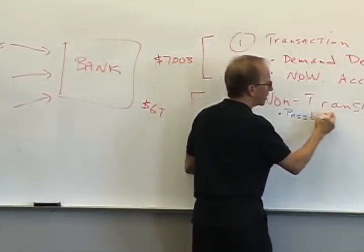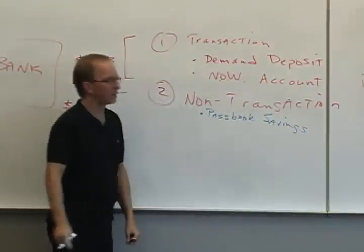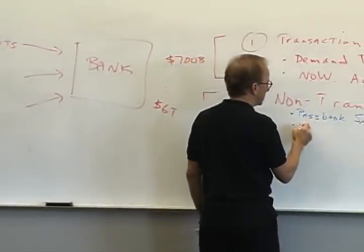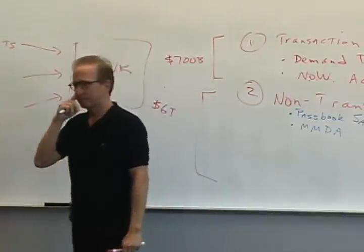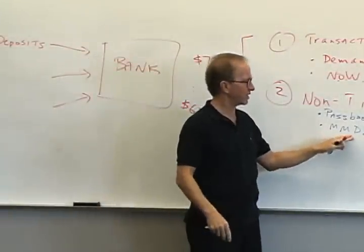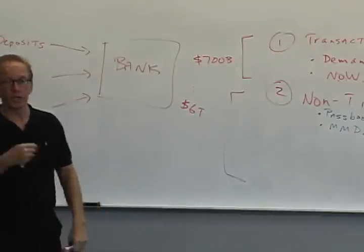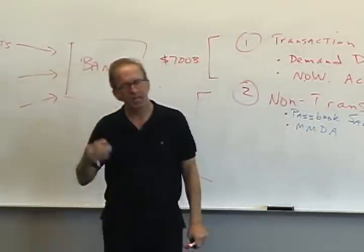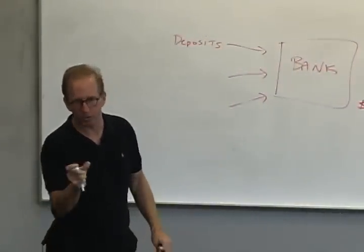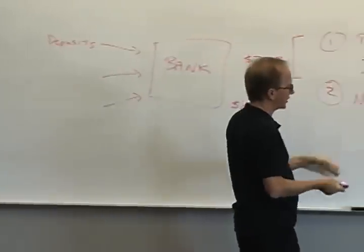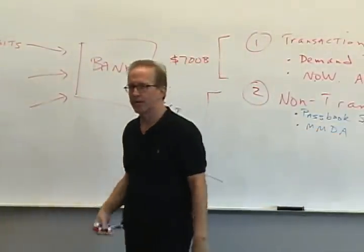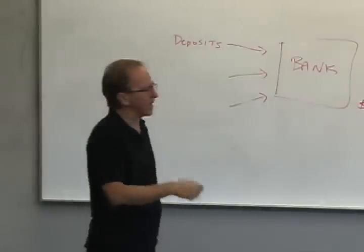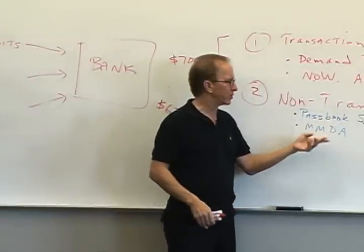We talked about passbook savings accounts - usually no minimum denomination, usually no maturity date. I also talked about the money market deposit account. Not really much different than a passbook savings account in the sense that there is no maturity date. The difference is you do have a checkbook, but you're only permitted to write a limited number of checks a month - about six transactions a month - so it can't really be your main checking account.